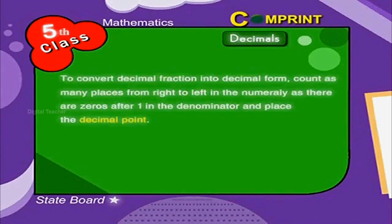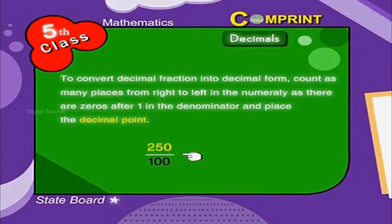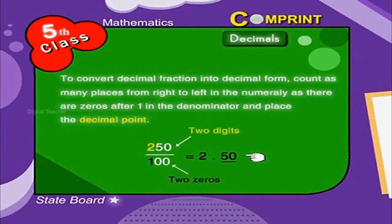To convert a decimal fraction into decimal form: count as many places from right to left in the numerator as there are zeros after 1 in the denominator, and place the decimal point there. For example, 250 by 100 is written as 2.50.